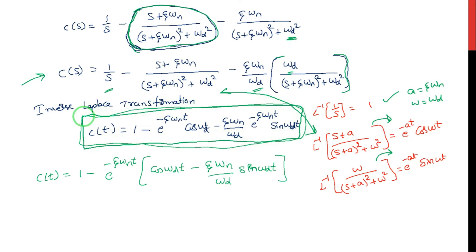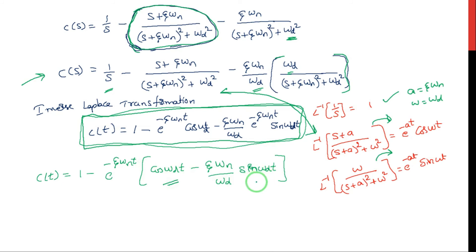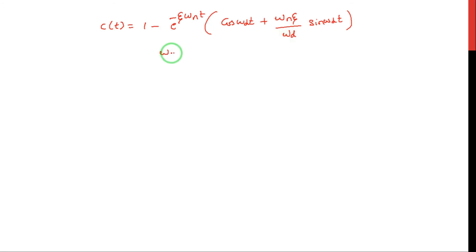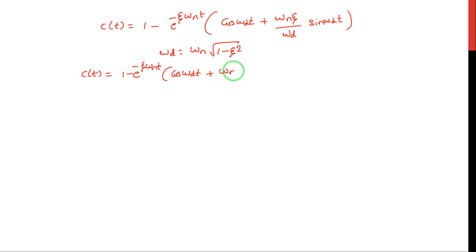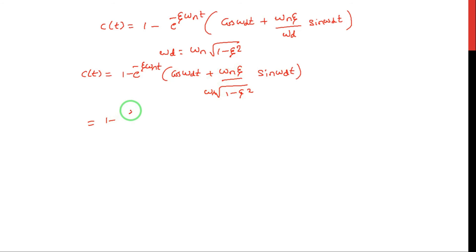So the final time domain output response is: c(t) = 1 − e^(−ζωnt)[cos(ωdt) + (ζωn/ωd)sin(ωdt)]. The term e^(−ζωnt) is common in the last two terms. Substituting ωd = ωn√(1 − ζ²), the ωn in the numerator and denominator cancel, leaving ζ / √(1 − ζ²) as the coefficient of sin(ωdt).